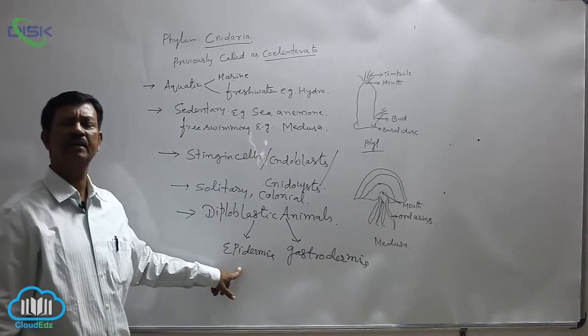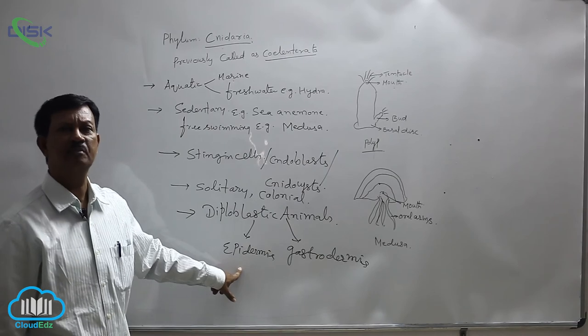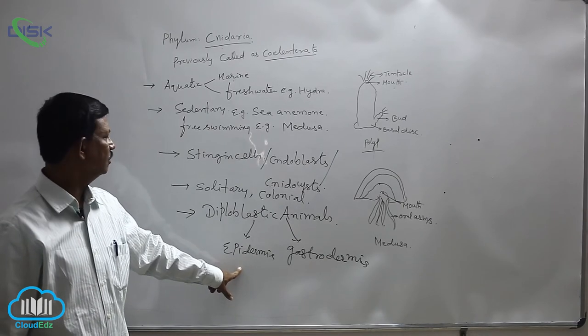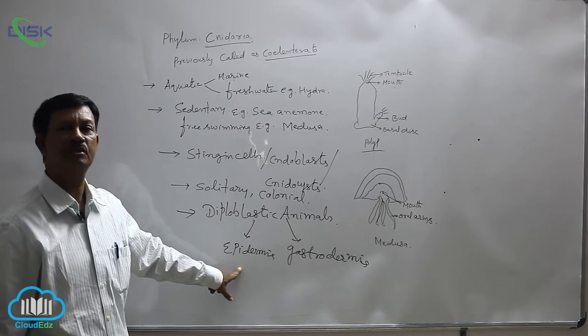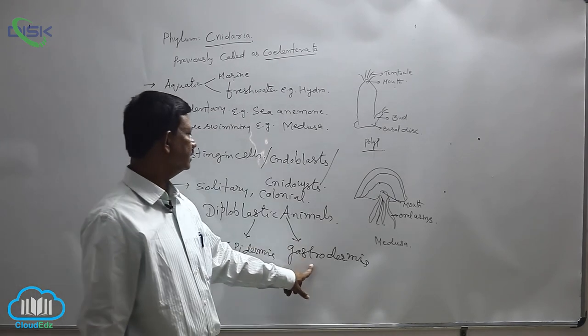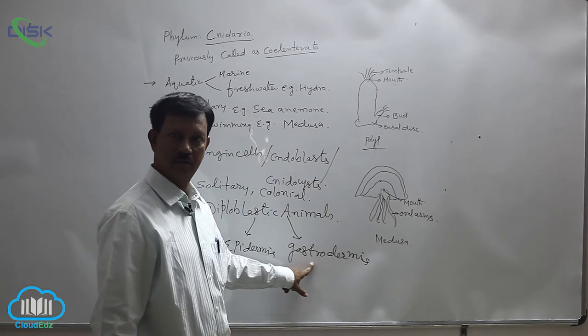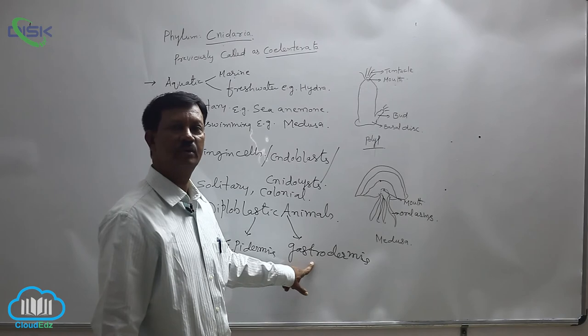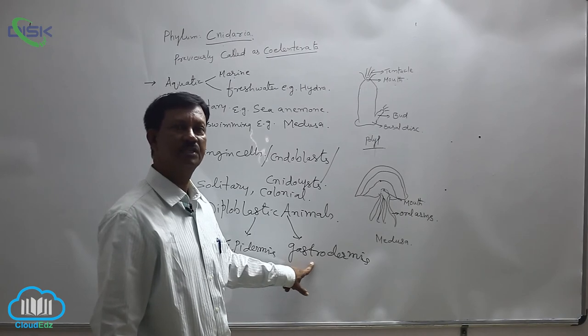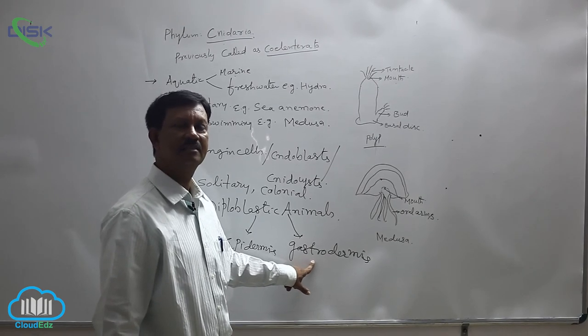In the epidermis, different types of cells are present. They are mainly useful for protection. The gastrodermis is present around the inner cavity, known as the coelenteron. Its main function is digestion and circulation.